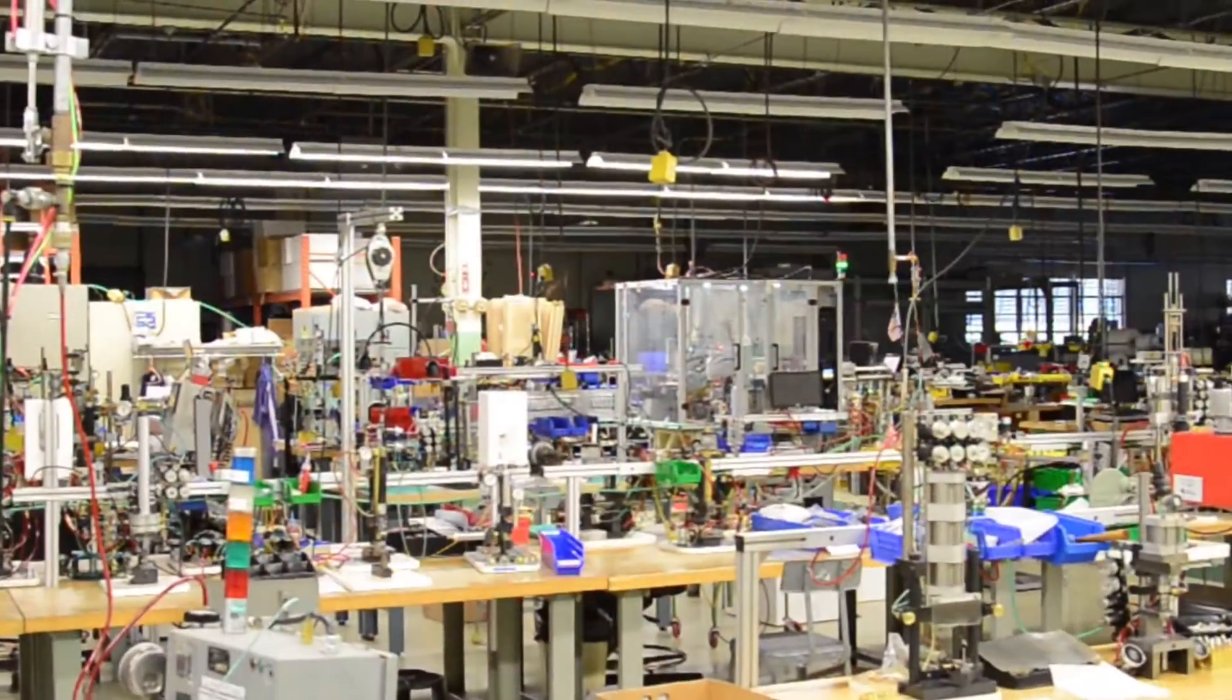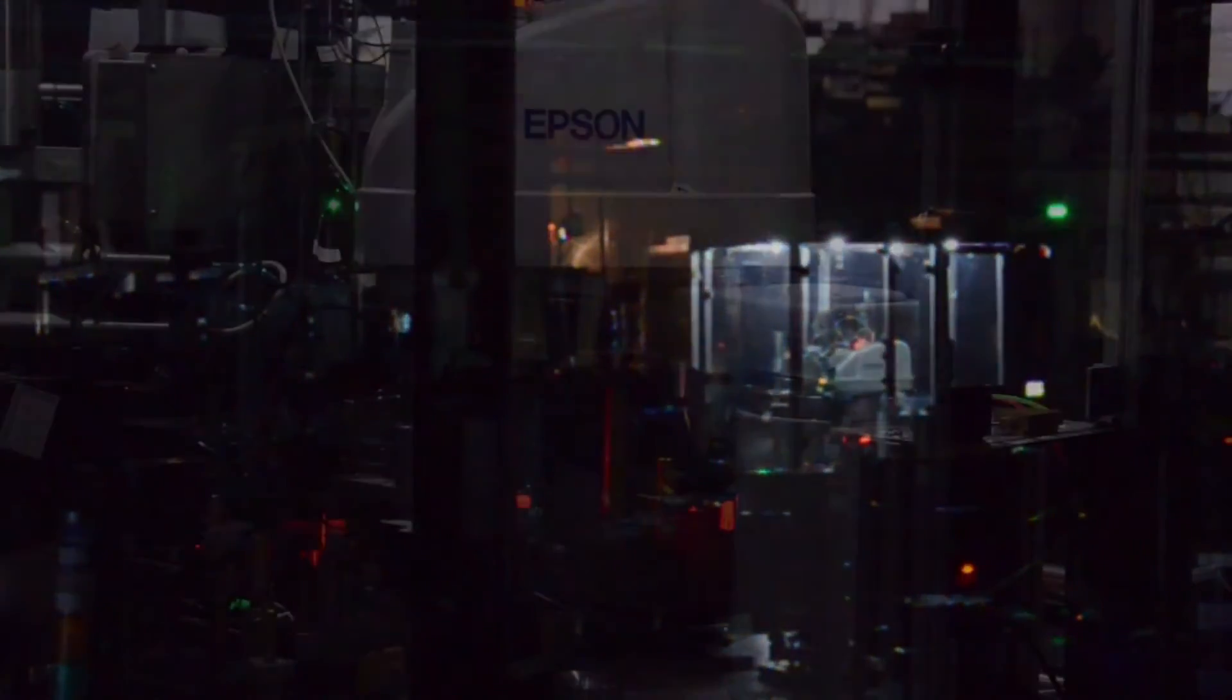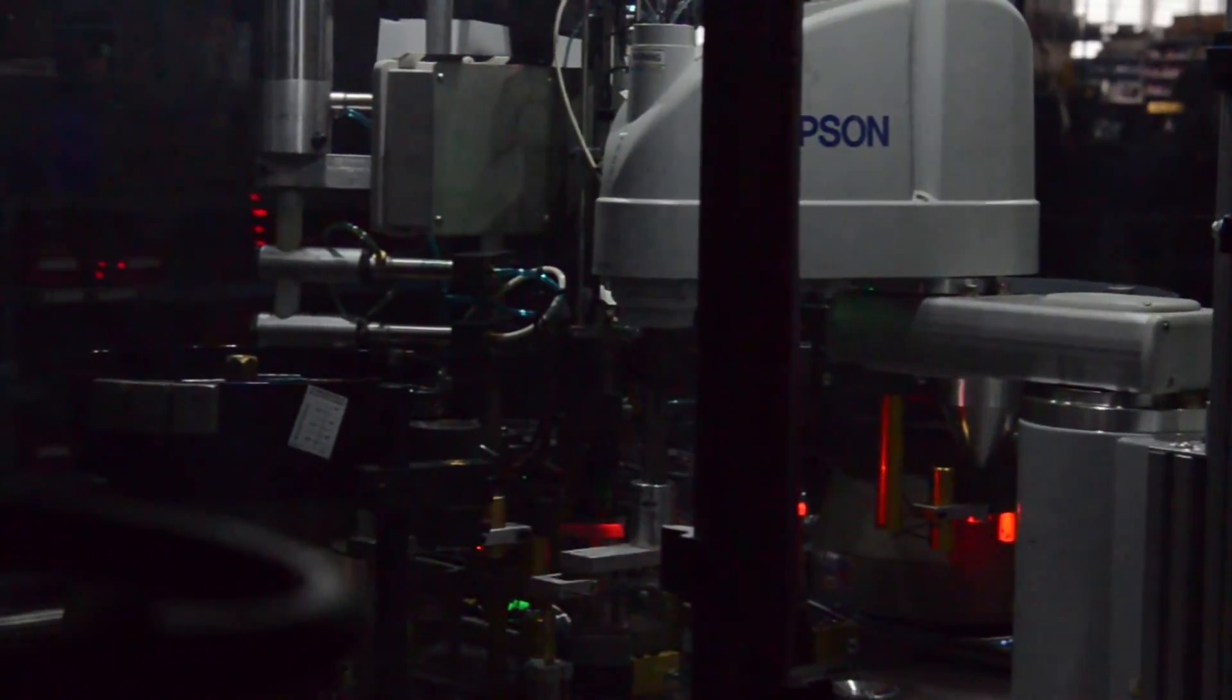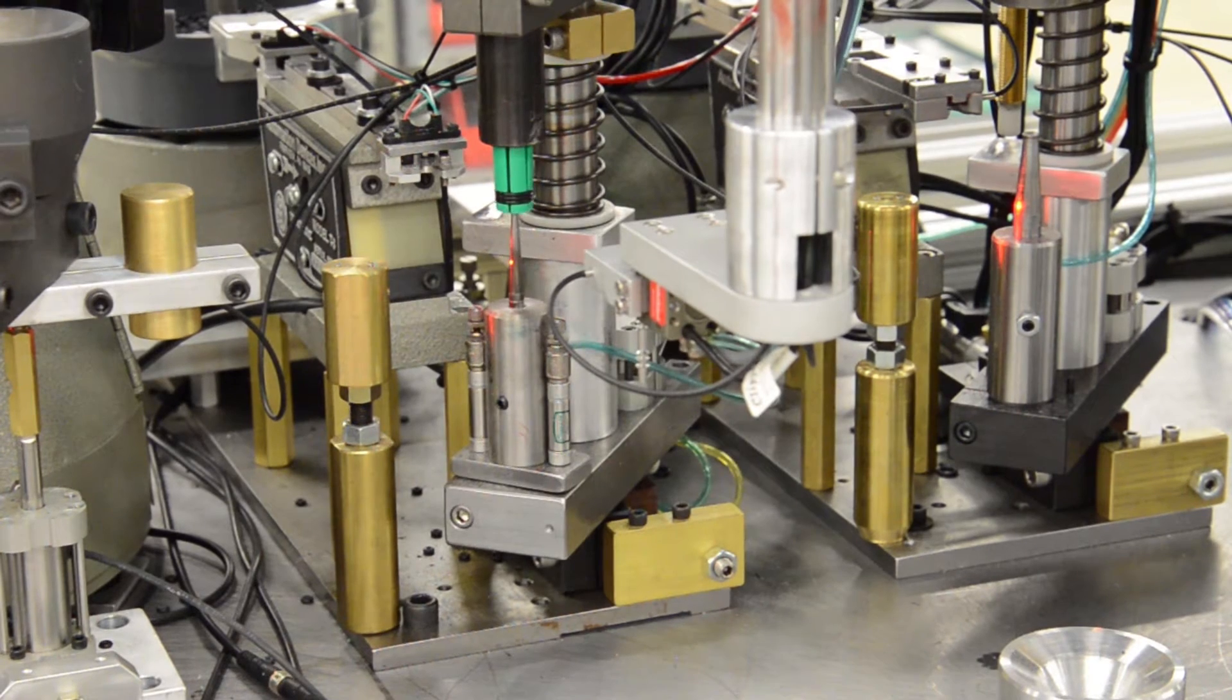As assembly staff heads home to be with their families, this machine continues building spool valve sub-assemblies for the popular MAV, MJTV, and FV series spool valves. These components will be assembled overnight ready for the final product assembly in the morning.